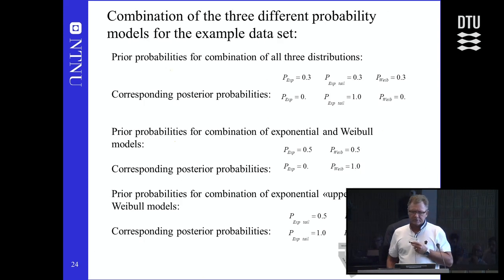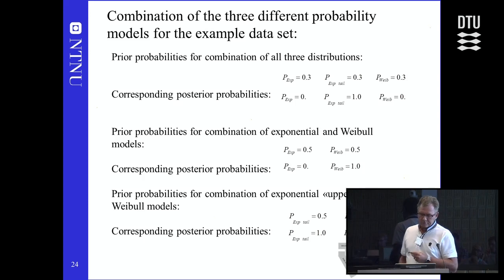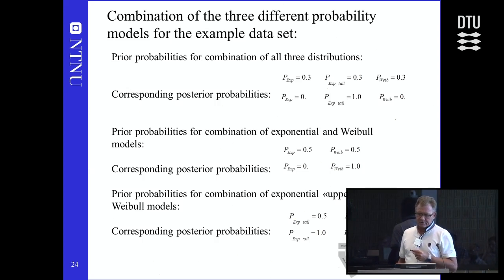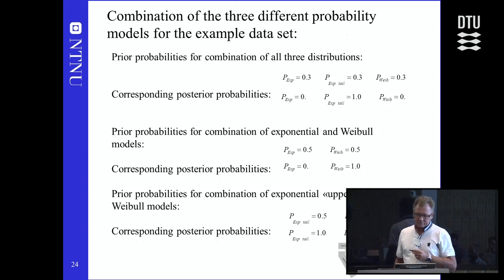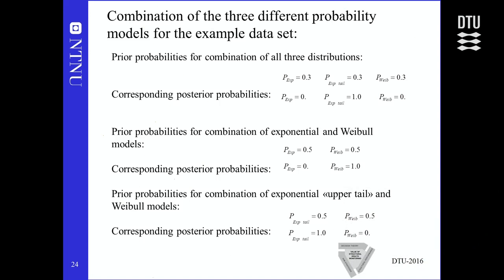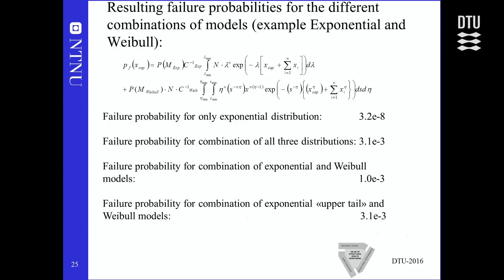Putting numbers into these expressions with equal prior probabilities of one third for each of the three distributions, the posterior probabilities become binary for this small data set due to differences in normalization factors. The upper tail exponential gets all the weight while others get zero. Starting with exponential and Weibull at 0.5 each, the Weibull takes all the weight. Starting with upper tail and Weibull at 0.5, the upper tail exponential wins and Weibull gets zero. This binary behavior is likely a consequence of the very small data set.